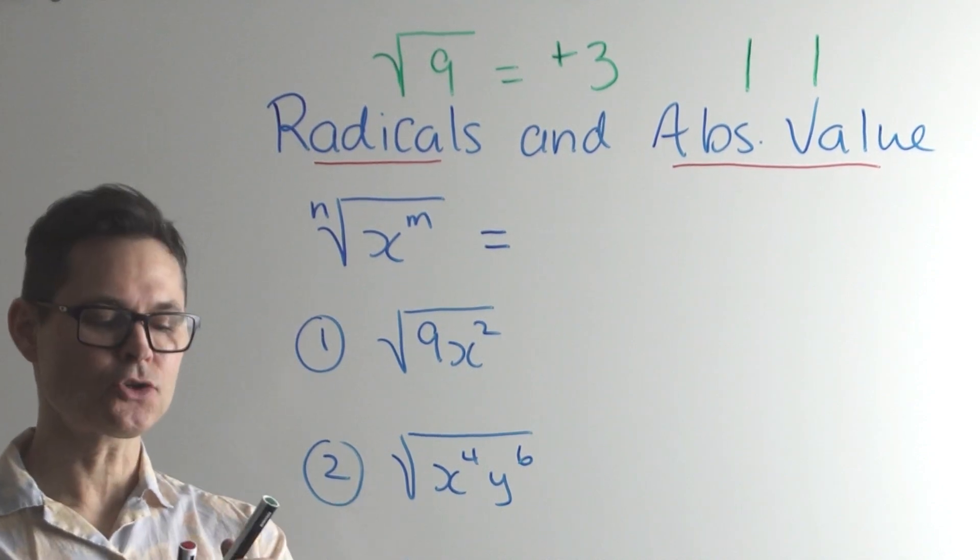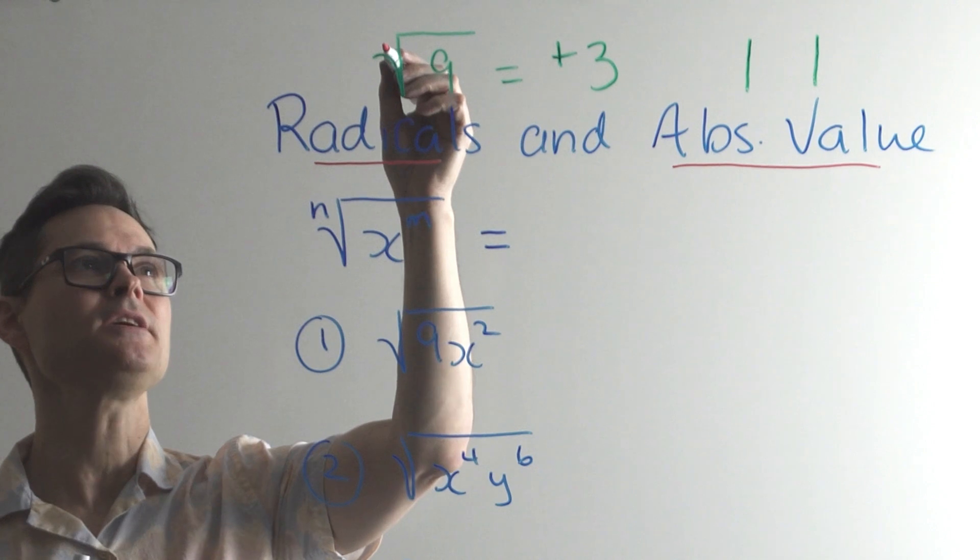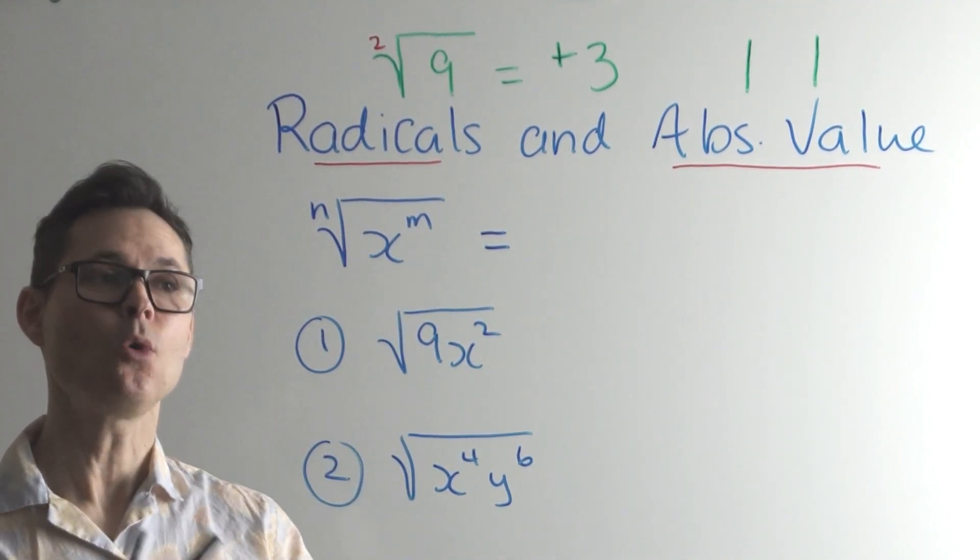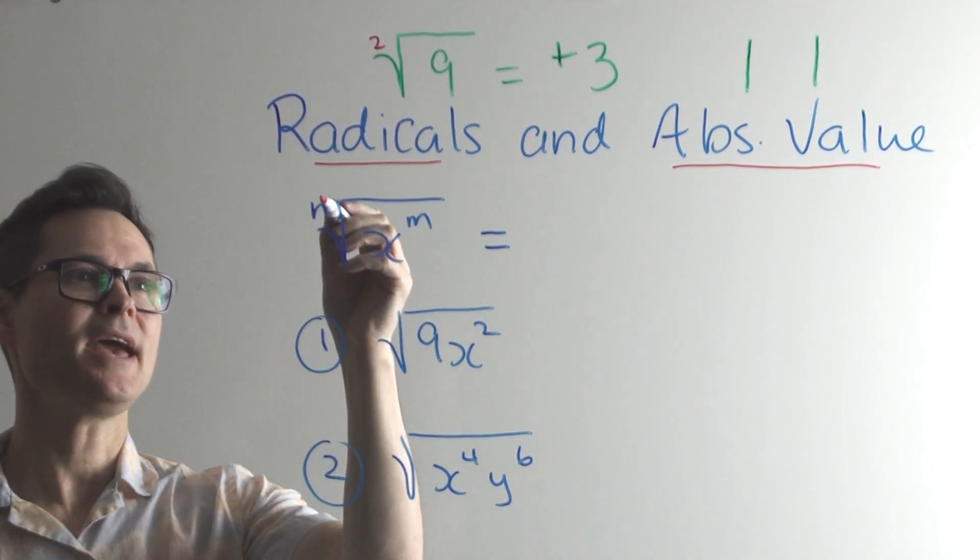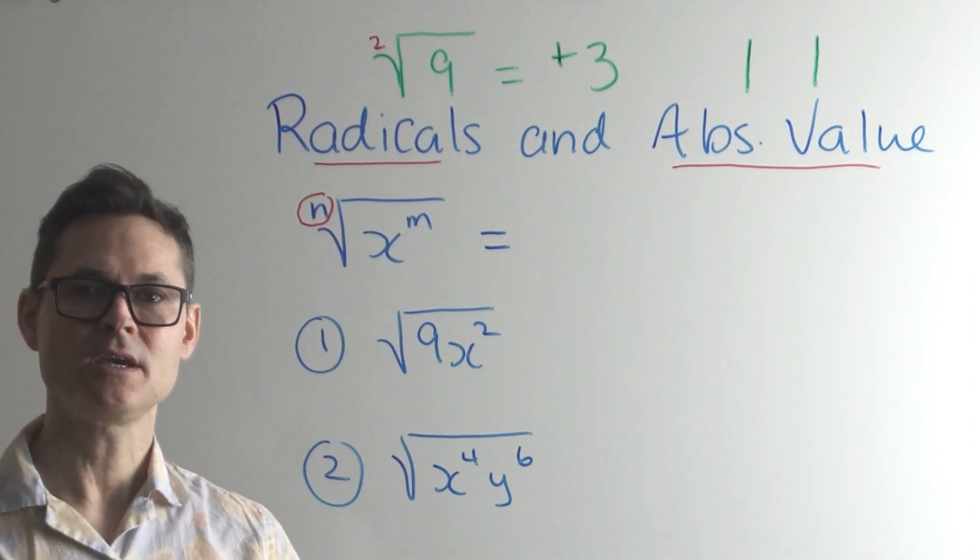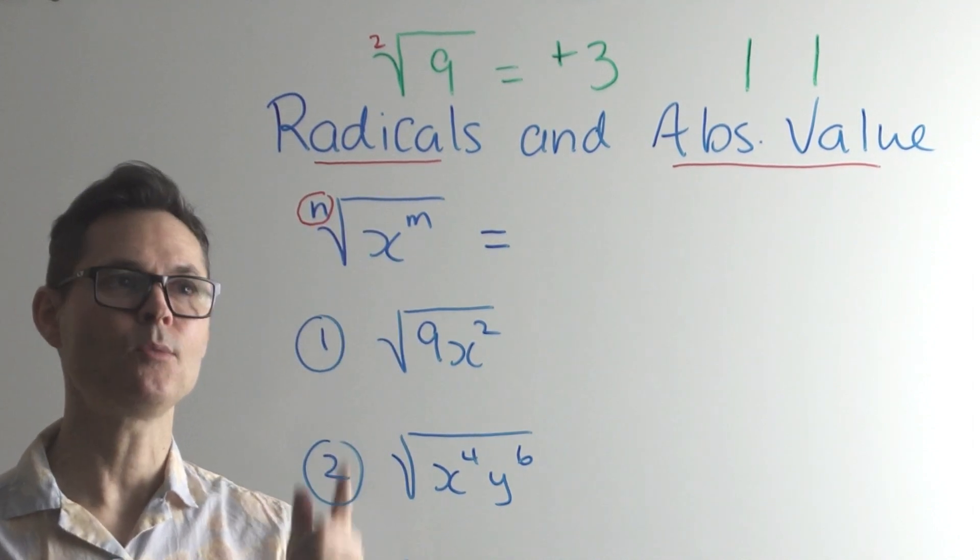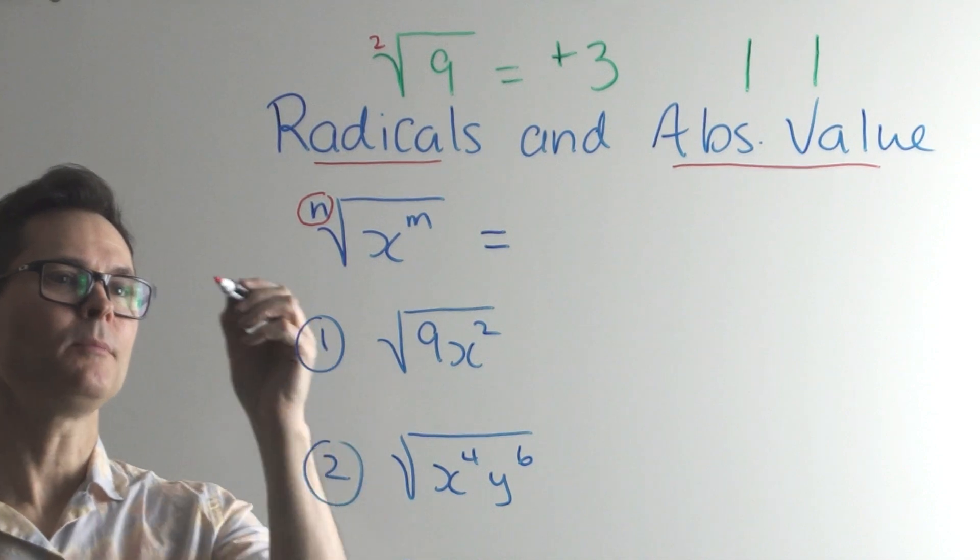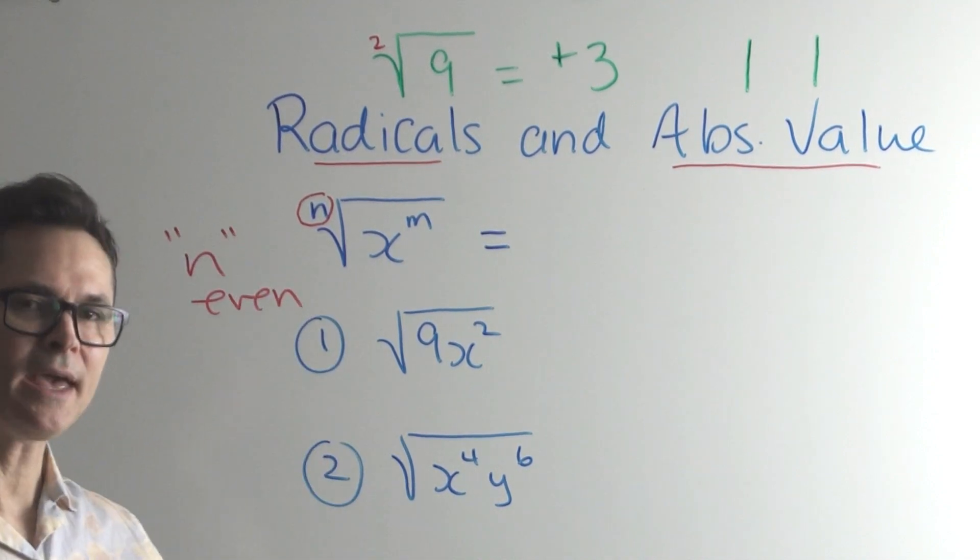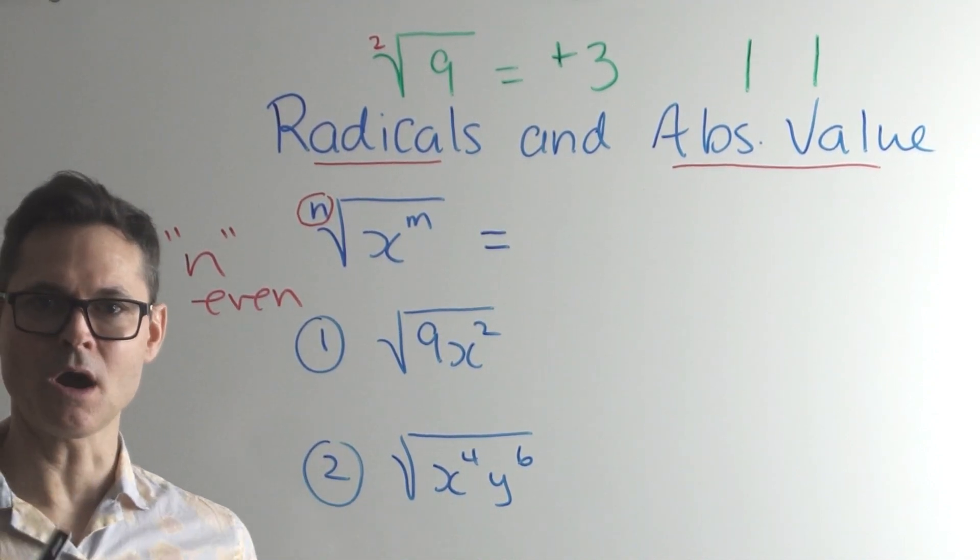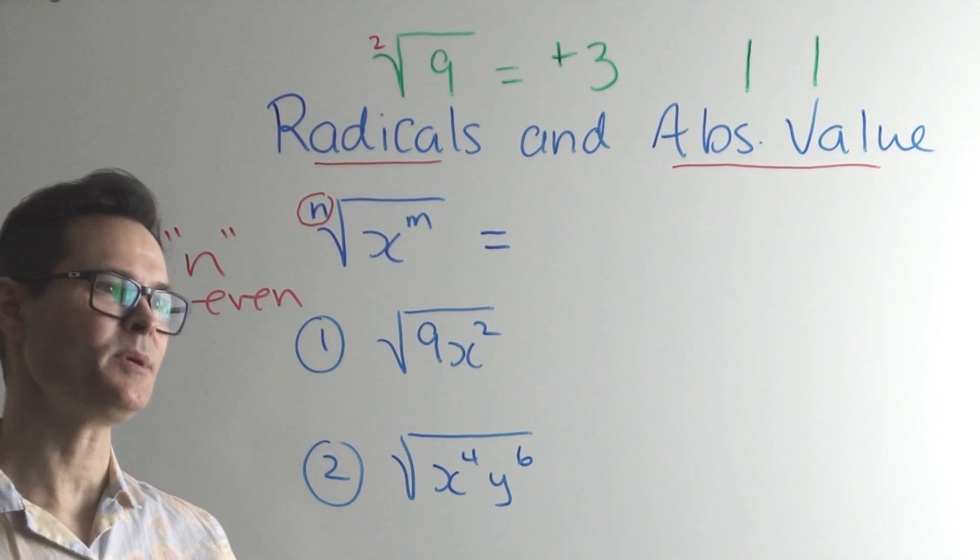So this is true whenever the index here is even. Now in this case, it's square root. But what I'm about to tell you is any case where the index is even. Where n is even. If n is not even, then what we're about to talk about doesn't hold. It has to be even.